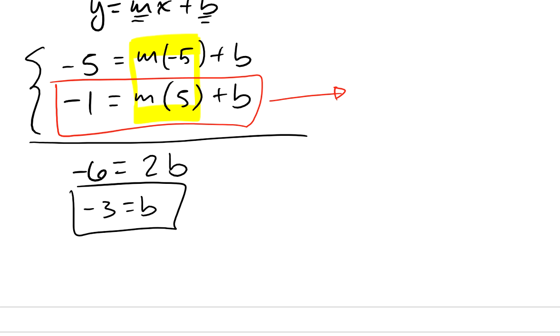I'll write down that negative 1 equals m times 5 and then minus 3. Again, all I did was I replaced b in this equation with the b that I just found. Instead of writing plus b, I wrote plus the negative 3 that b was. I'll add 3 to both sides. When I do that, I get 2 is equal to 5m. If I divide both sides by 5, I get 2 fifths is the value of my slope.